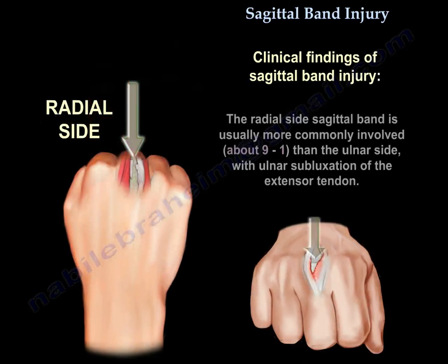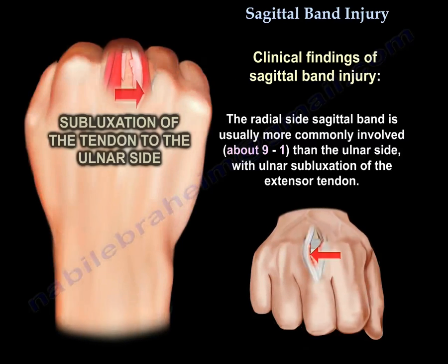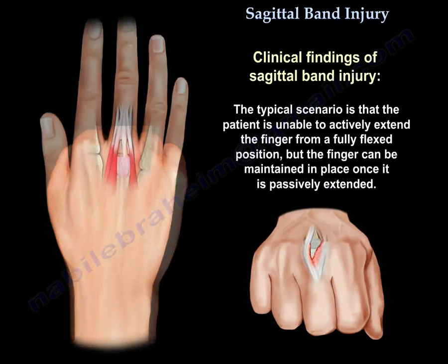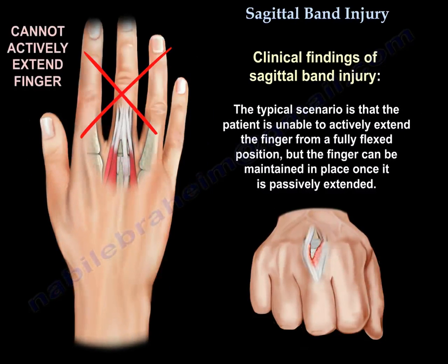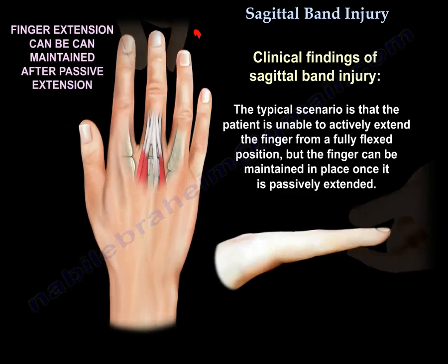The radial side sagittal band is usually more commonly involved, about 9 to 1 compared to the ulnar side, with ulnar subluxation of the extensor tendon. The typical scenario is that the patient is unable to actively extend the finger from a fully flexed position, but the finger can be maintained in place once it is passively extended.